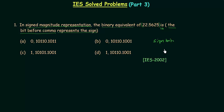We can represent binary numbers in three ways. The first one is signed magnitude representation, the second one is one's complement representation, and the third one is two's complement representation.